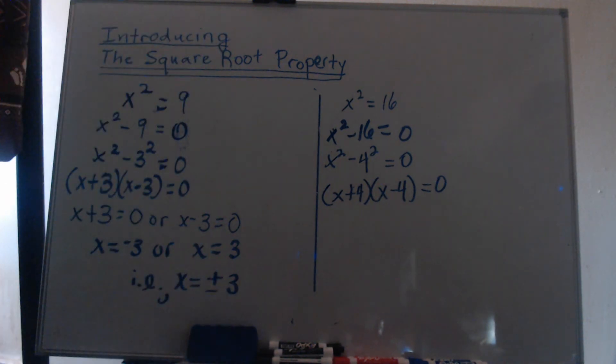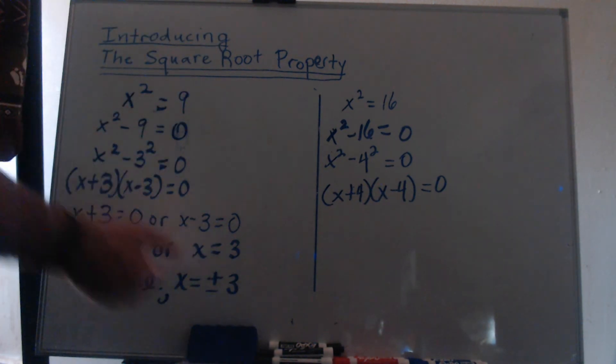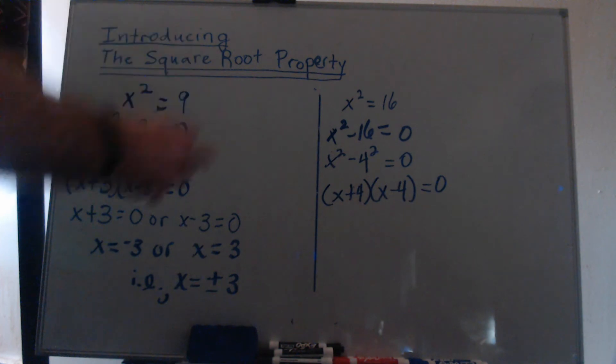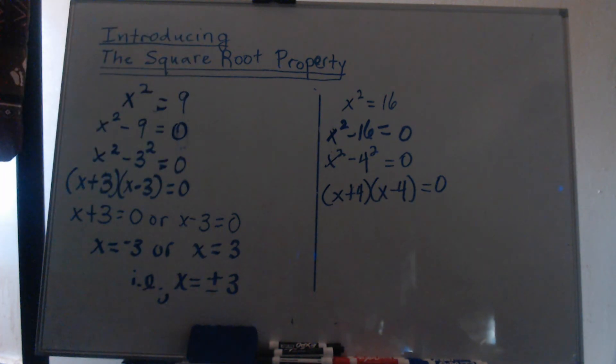Both of those check. Obviously, 3 squared is 9, but with negative 3 squared, negative 3 times negative 3, those two negatives are going to cancel out and give us a positive.